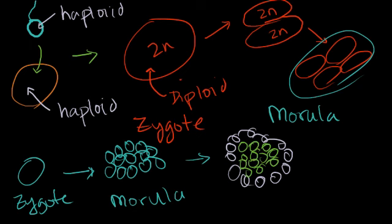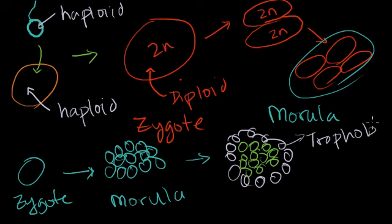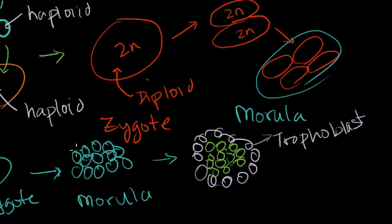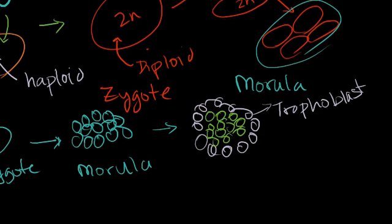These outer cells are called the trophoblasts. And then the inner cells — and this is kind of the crux of what this video is all about — the inner cells are called the embryoblasts.